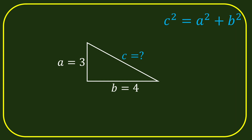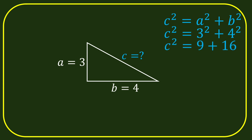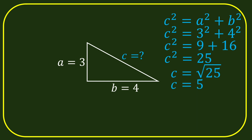We use the formula c squared equals to a squared plus b squared, and we substitute a by 3 and b by 4. So we now have c squared is equal to 3 squared plus 4 squared. The product of 3 squared is 9, and the product of 4 squared is 16. So we have 9 plus 16 is 25, meaning c squared is equal to 25. And we have c is equal to the square root of 25, and the square root of 25 is 5. Our hypotenuse, which is c, is equal to 5.